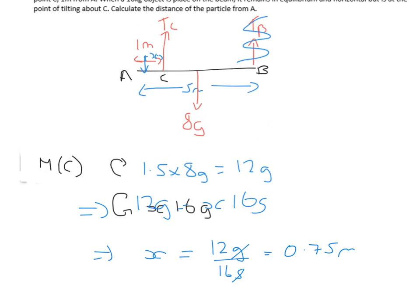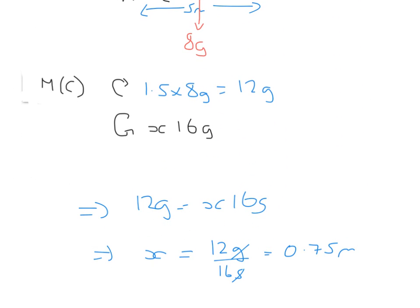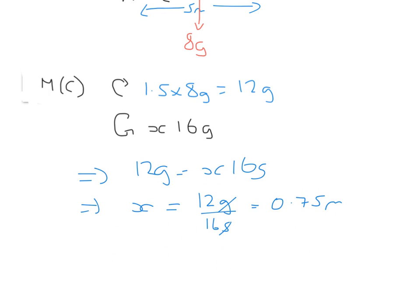So you know that x is 12g over 16g. Those cancel to leave you with 0.75, and we know it's a meter. Now the question asked you the distance from A. So we need to calculate what that is. From A it's going to be 1 minus 0.75.